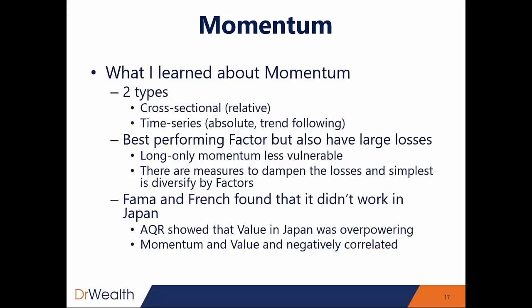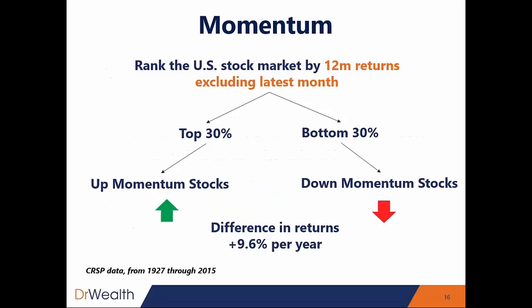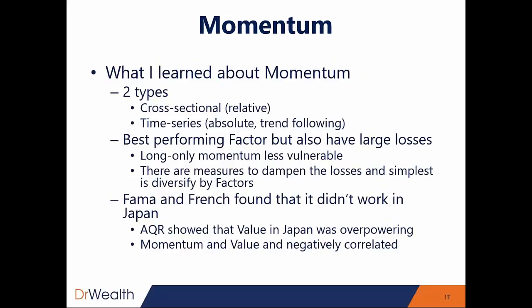But momentum is not a free lunch. I learned a lot more about momentum from this book compared to value and size. There are two types of momentum. The first type is called cross-sectional momentum, which means you are comparing within the same asset class — ranking stocks in that space and identifying the top 30% and bottom 30%, as we just discussed. This slide is known as the cross-sectional momentum factor — it involves a comparison and a relative ranking.